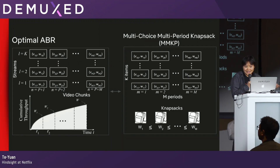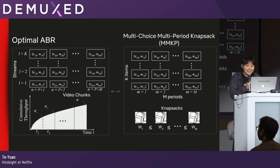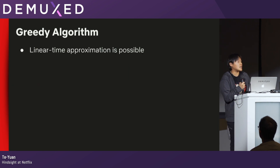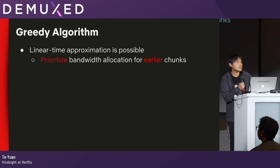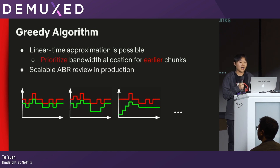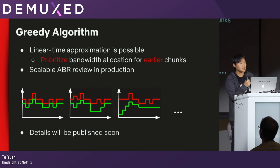If you are a geek like me, you will be excited to know that this is actually equivalent to the multi-choice, multi-period knapsack problem — which is exciting, but it is computationally expensive and not really scalable. Very fortunately, though, there is a linear time approximation available. The main idea is that we can prioritize the bandwidth allocation to the earlier chunk, given they have a tighter deadline. With this idea, we are able to have a scalable ABR review system in production, and we are planning to publish the details in an upcoming academic conference. So stay tuned, and please come chat with me if you would like to learn more. Thank you.